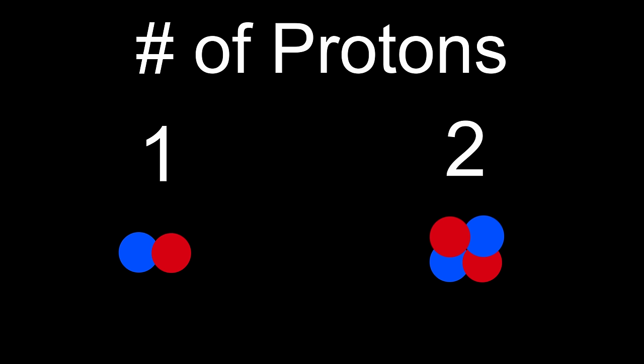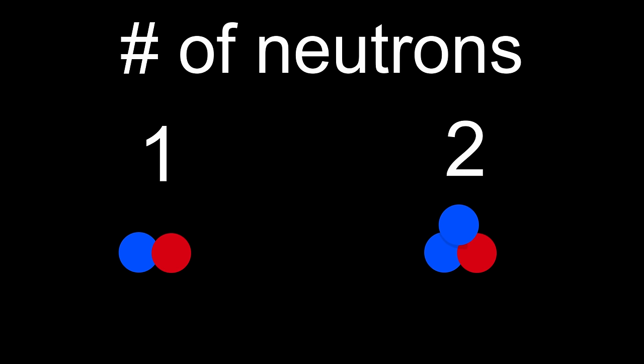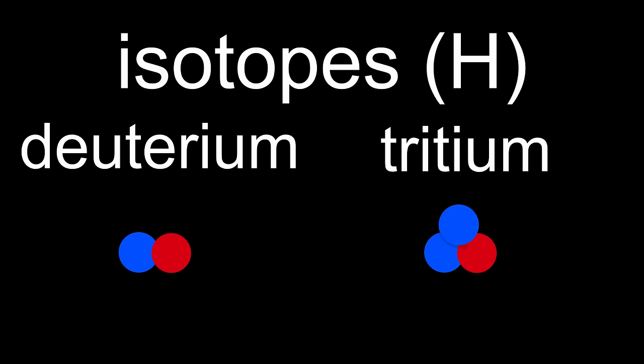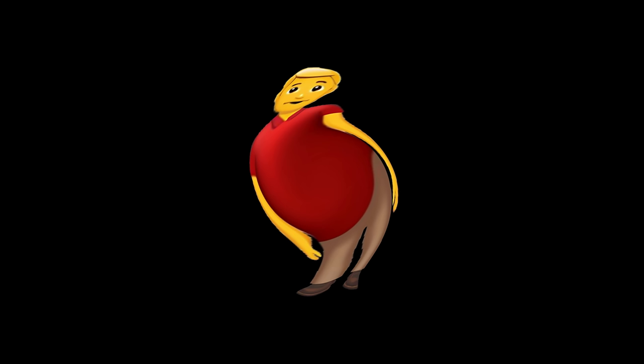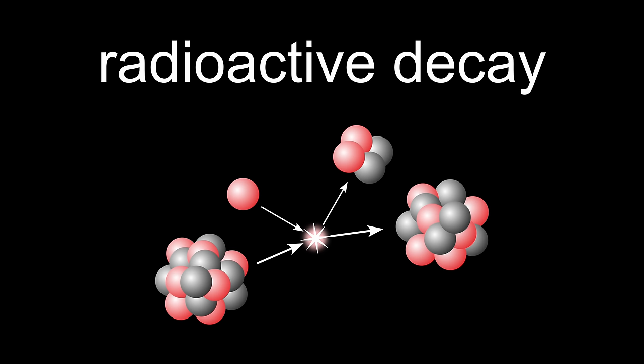Fun fact, depending on the number of protons in the core, you get different elements. Depending on the number of neutrons in the core, you get different isotopes of the same element. Most of which are a little overweight and very unstable, so they fall apart into smaller atoms.